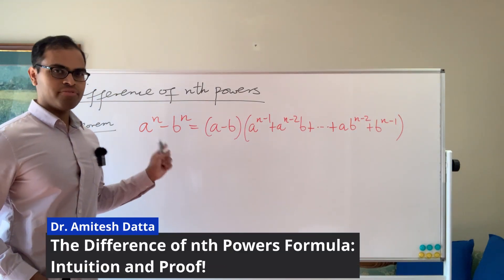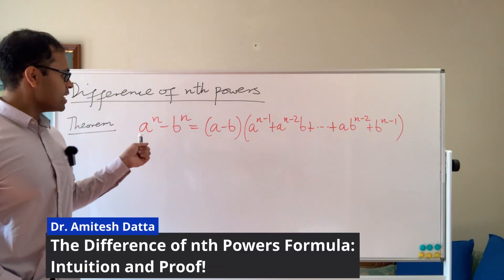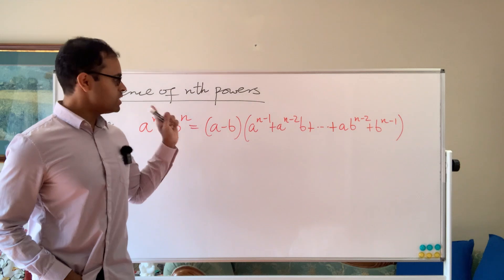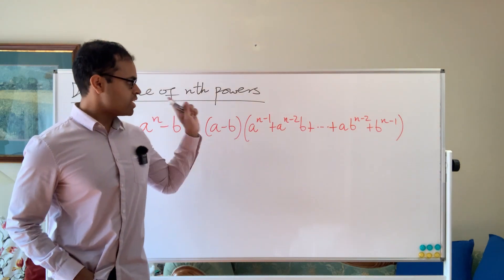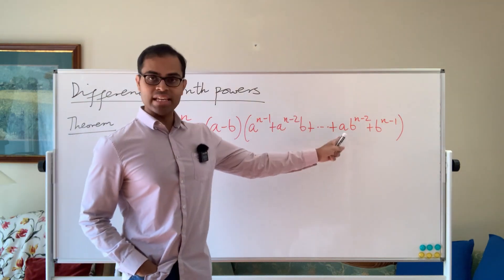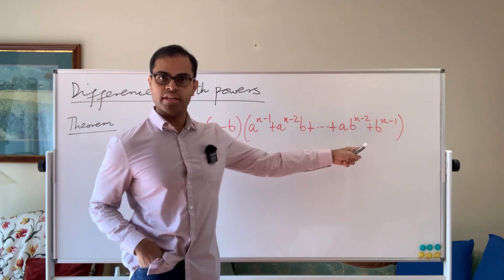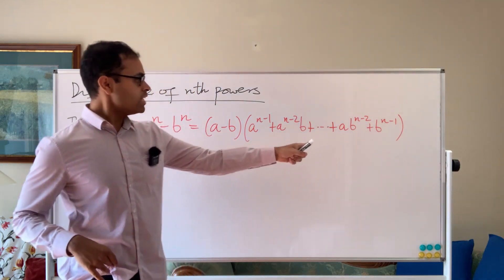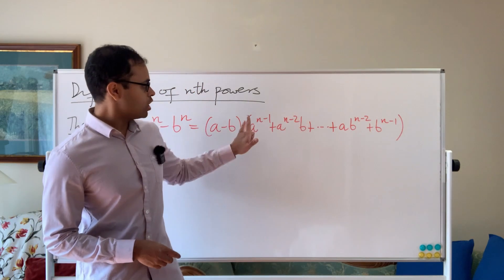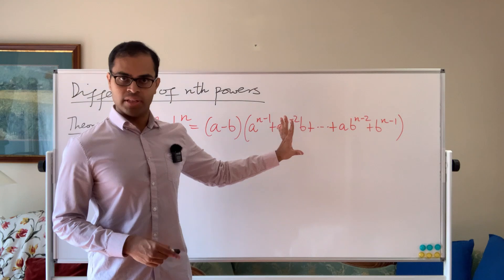You need to know this formula for high school and college math. It's a to the n minus b to the n equals a minus b times a to the n minus 1 plus a to the n minus 2b plus dot dot dot plus a b to the n minus 2 plus b to the n minus 1. In each case, the exponents add up to n minus 1, and all the coefficients in the second parentheses are 1.